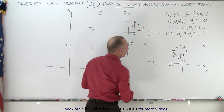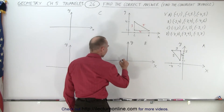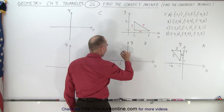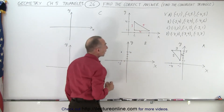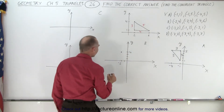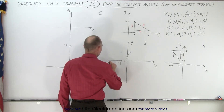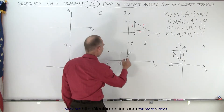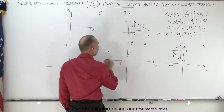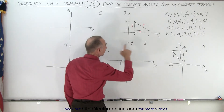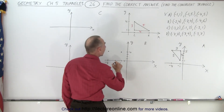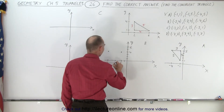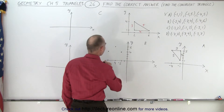For Triangle B, the first point is at (-2, 4). The next point is (-7, 4), so negative seven in x and four in y. The third point is (-4, 6) — negative four in x, and six in y, up at about five-six in the y direction.